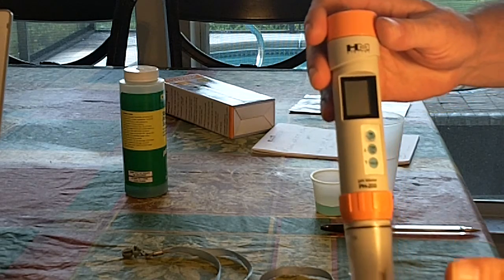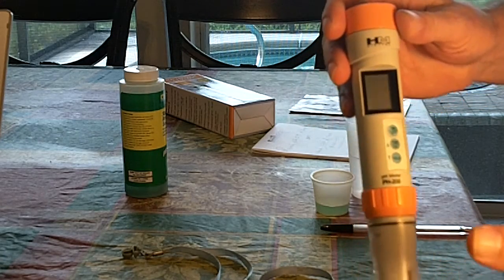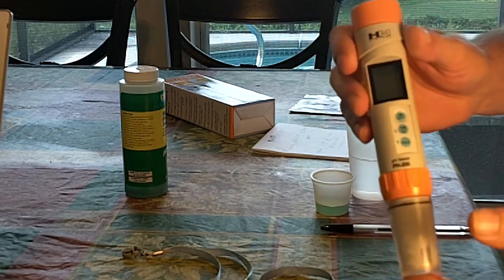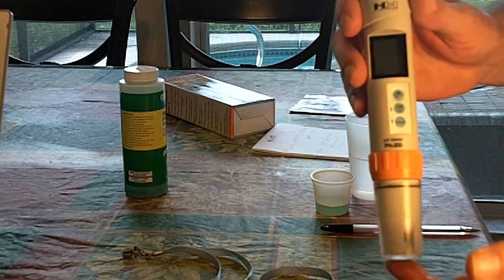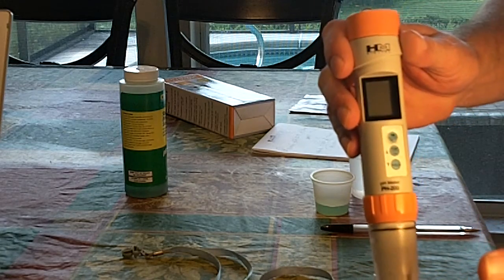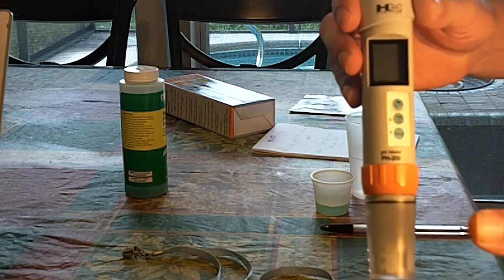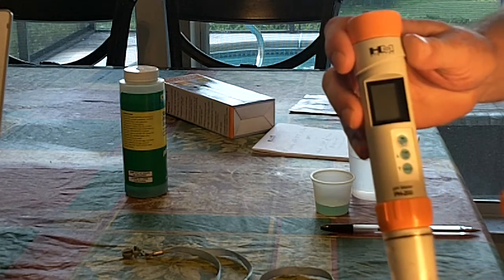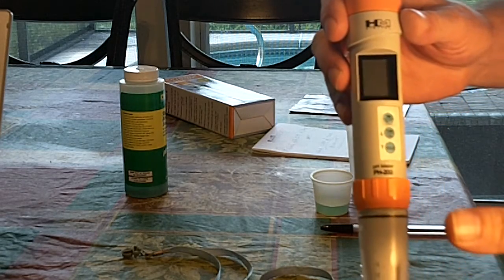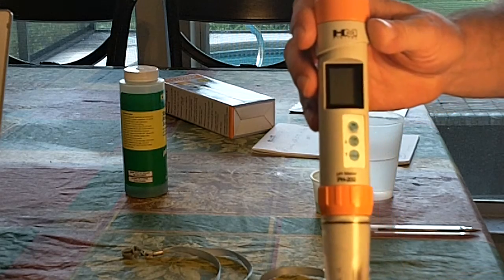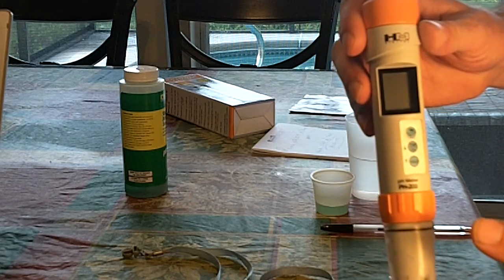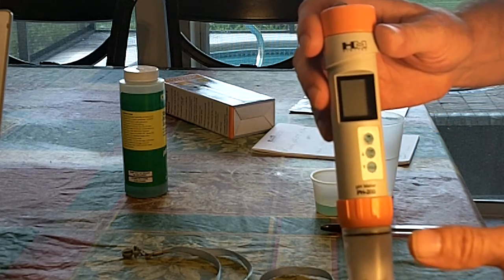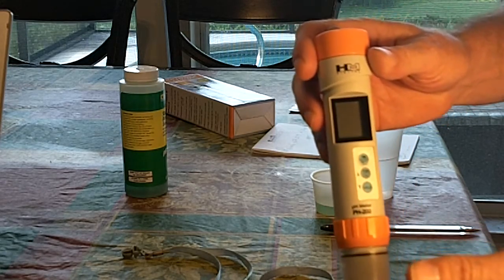It can be calibrated automatically with an automatic sensing function or it can be calibrated manually where you actually tell it what it should be reading when you're putting in the solution. When you're going to calibrate a unit like this you usually calibrate with whatever value that you're going to be working with. If you're working with an acid you would calibrate down at the 4 range. If you're working in our case with something that's close to neutral, we want our water in our aeroponic systems running at about a six, so we calibrate with a seven. If you're doing something higher, something more on the basic side, you would calibrate with the 10.